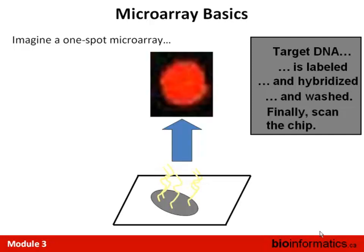You can directly scan the array and get a picture — it's not a perfect spot by any means, and when you look at raw microarray data it always has fuzziness and features that make analysis tricky. The intensity of the fluorescence signal is proportional to how many molecules of labeled DNA are there — you should see a big difference between 100 million and 10 million molecules.